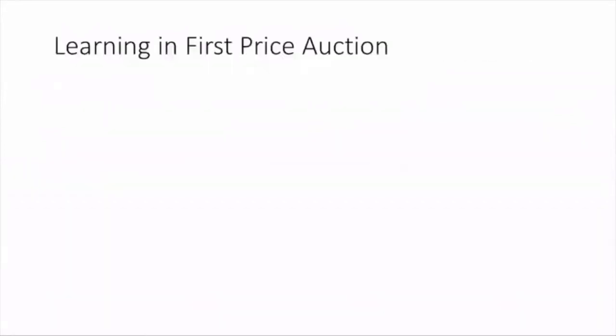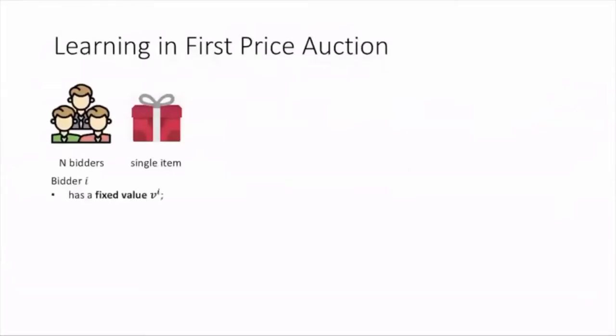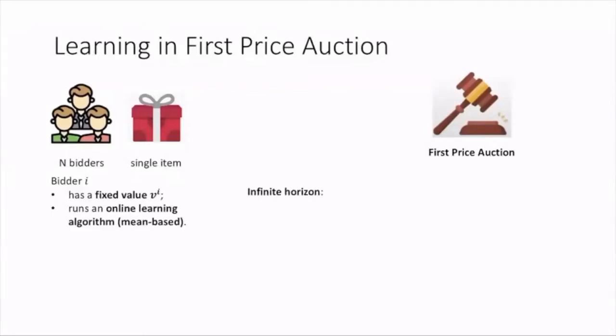Here is our model of learning in first price auction. There are n bidders and a single item sold by a single seller. For each bidder i, it has a fixed value vi towards the single item, and runs an online learning algorithm satisfying the mean-based property to learn to bid. These are two key assumptions in our model, which I will talk about later.